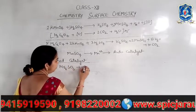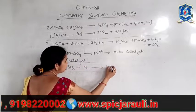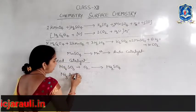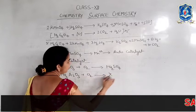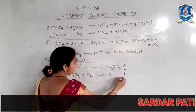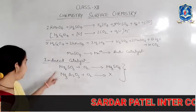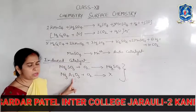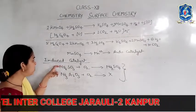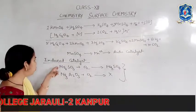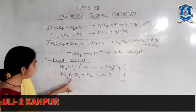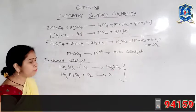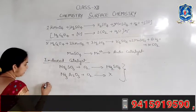For example, sodium sulfite oxidizes easily to sodium sulfate, but sodium arsenite does not oxidize on its own. However, when both reactions occur simultaneously, sodium sulfite causes sodium arsenite to become oxidized as well. Hence, this reaction acts as an induced catalyst — when both oxidations take place simultaneously, this compound also becomes oxidized due to the presence of the other chemical reaction.